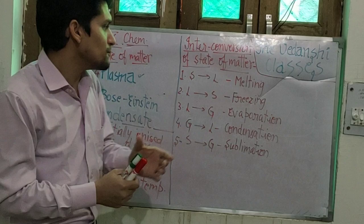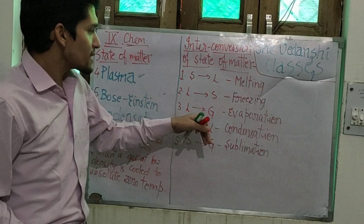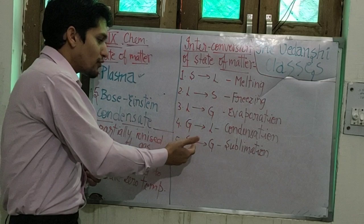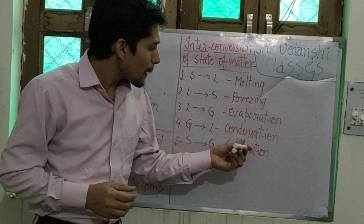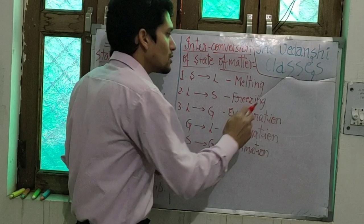When solid converts to liquid, this process is called melting. From liquid to solid, this process is called freezing. From liquid to gas, the process is called evaporation. From gas to liquid, this process is called condensation. And directly from solid to gas, this process is called sublimation. So this was the introduction of the interconversion of state of matter.